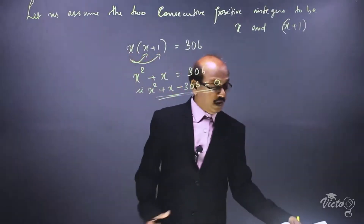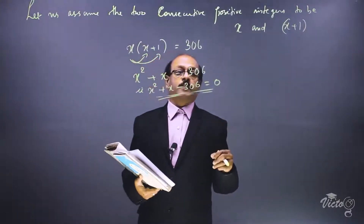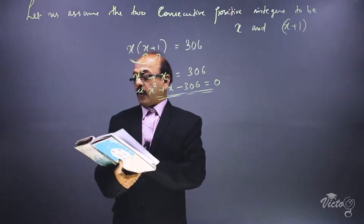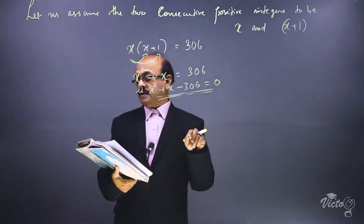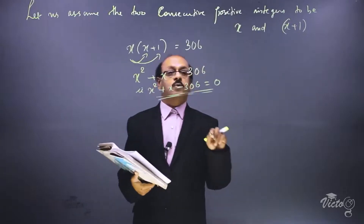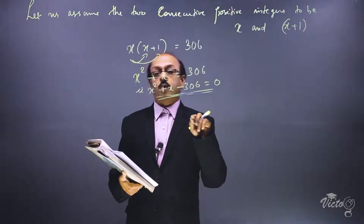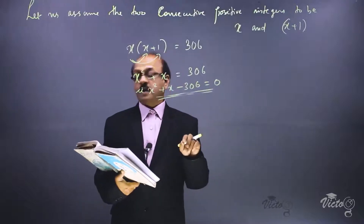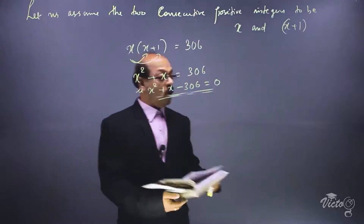The next question: Rohan's mother is 26 years older than him. The product of their ages in years three years from now will be 360. We have to find out the present age of Rohan.